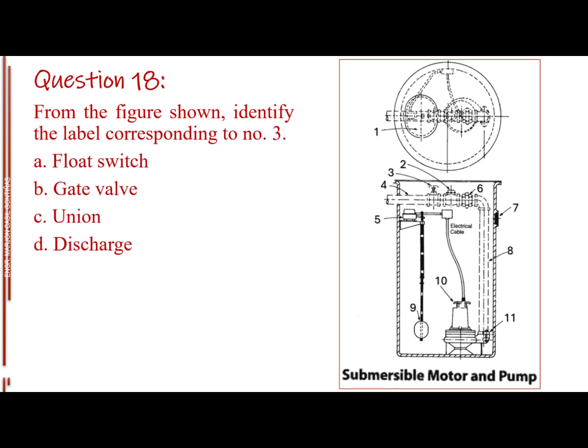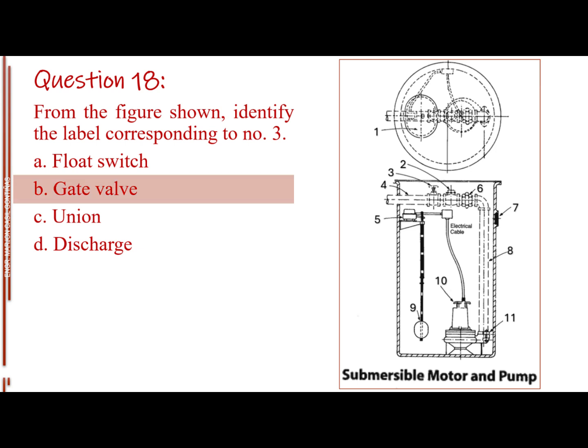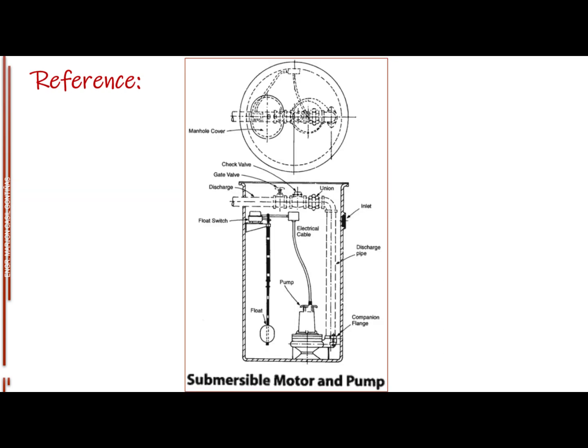Question number 18. From the figure shown, identify the label corresponding to number 3. Letter A, float switch. Letter B, gate valve. Letter C, union. Letter D, discharge. The answer is letter B, gate valve.